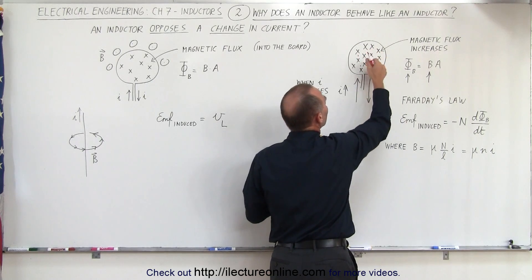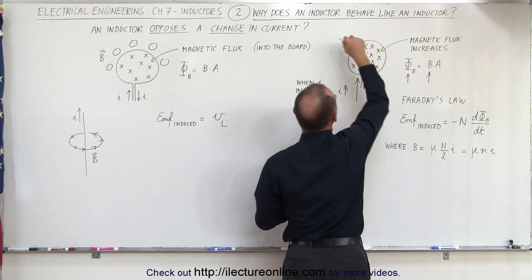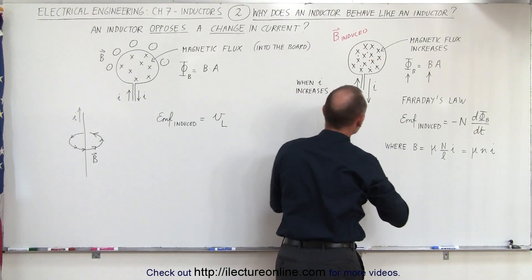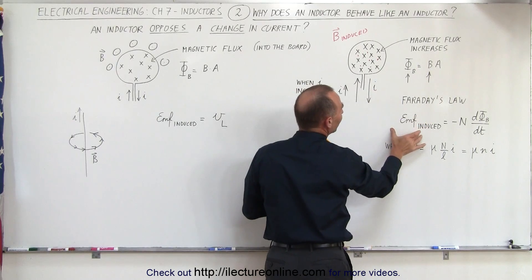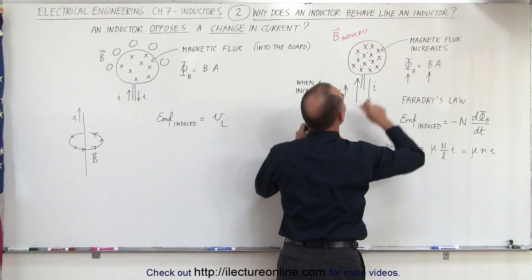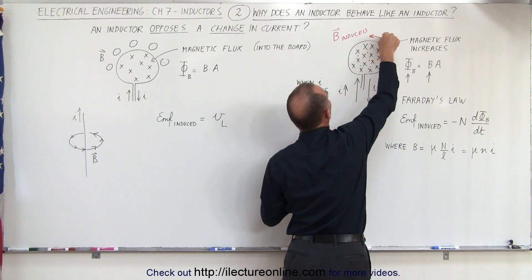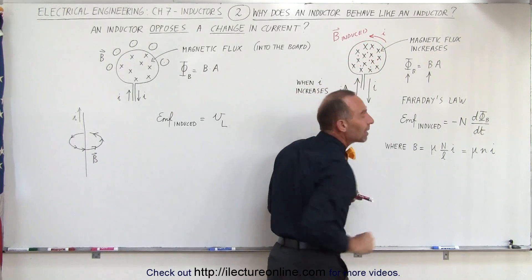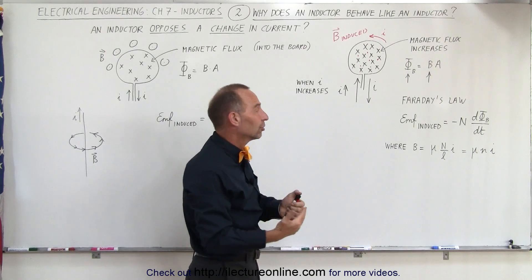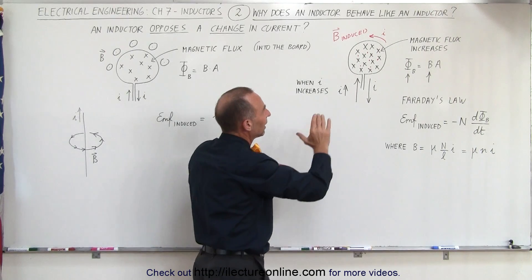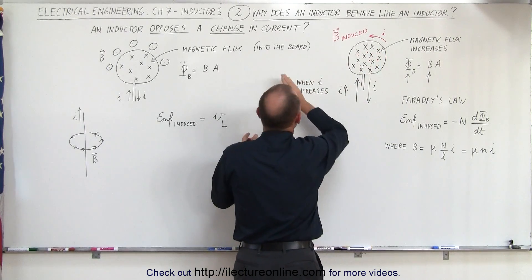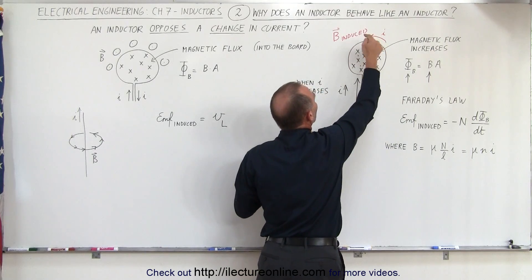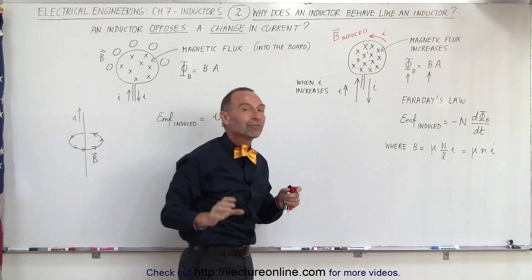Here I'm indicating with little dots that the magnetic field induced is coming out this way. This is the magnetic field induced by the coil, caused by an EMF that's induced, which causes a current to flow in the opposite direction. So now we have an induced current flowing in the opposite direction, producing a magnetic field in the opposite direction, which tries to stop the current from increasing in the first place. As long as the current is changing, an EMF is induced that sets up a current and magnetic field opposing the change.